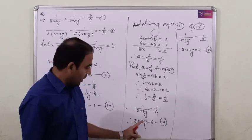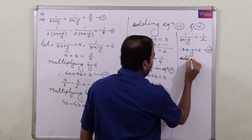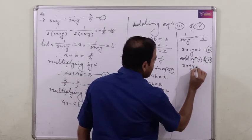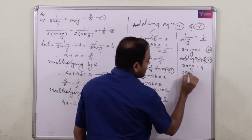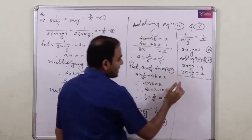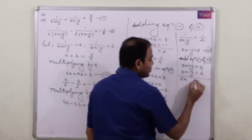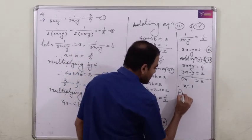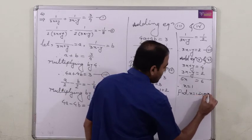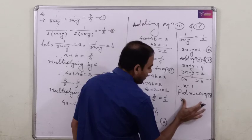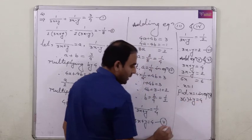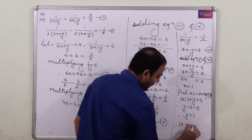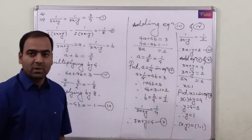We add the fifth and sixth equations because we have plus y and minus y which will cancel. Adding: 3x plus y equals 4, plus 3x minus y equals 2, gives 6x equals 6, so x equals 1. Putting x equals 1 in equation 5: 3 times 1 plus y equals 4, so y equals 4 minus 3, therefore y equals 1. The solution is x equals 1, y equals 1.